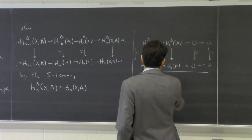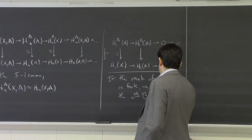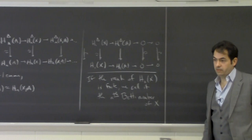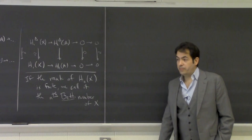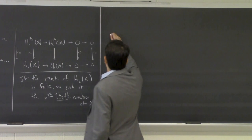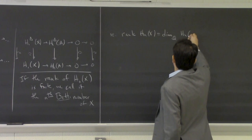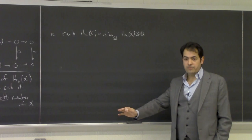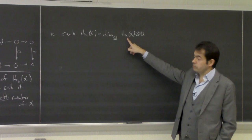Speaking of finitely generated groups, let's give this a name. If the rank of H_n(X) is finite, we call it the nth Betti number of X. Recall Betti was one of the people who made progress in topology between Riemann and Poincaré. The rank of an abelian group is the dimension over the rationals if you tensor with Q — you just get rid of all torsion and count how many copies of Z you have, which become copies of Q.